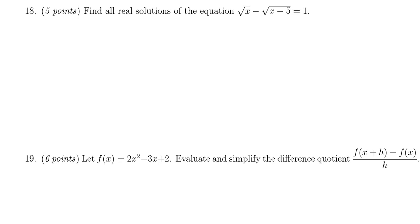In this video, we provide the solution to question number 18 from the practice final exam for Math 1050. We have a radical equation, the square root of x minus the square root of x minus 5 is equal to 1. We need to find all real solutions, so we can ignore any complex solutions if there's any, just real solutions here.